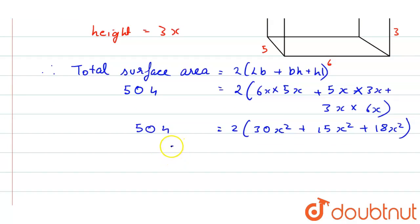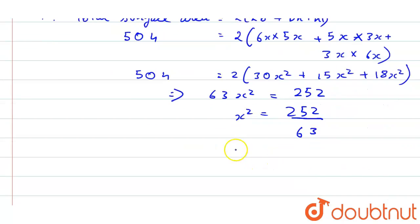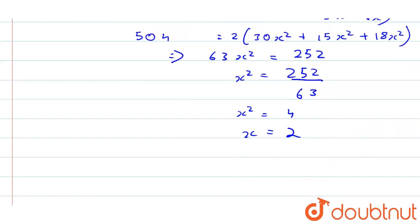63x² equals 252, that is x² equals 252 by 63. So we have x² equals 4, so x equals 2. Therefore length we have as 6x, so x value we have as 6 into 2 that equals 12.